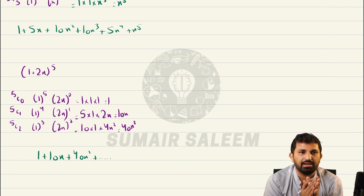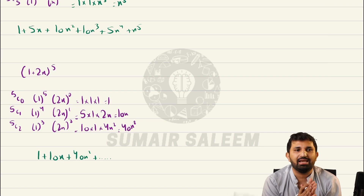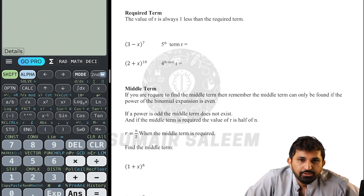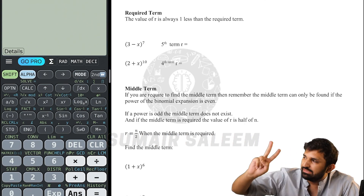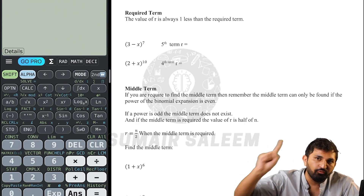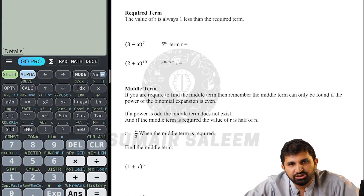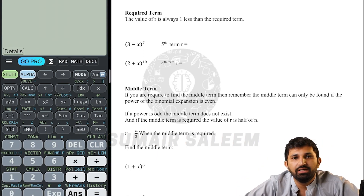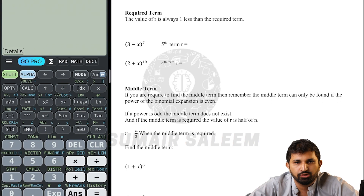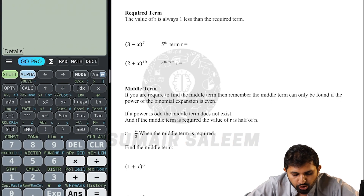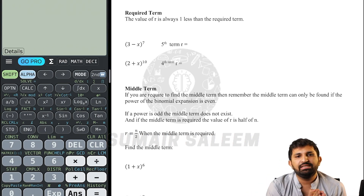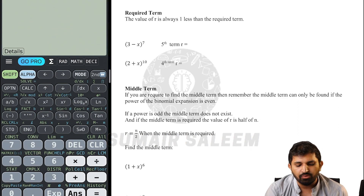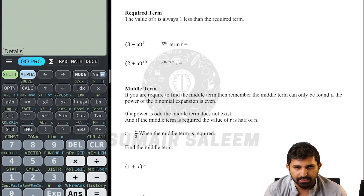These dot dot dots represent that you are not expanding fully. So in this last part we learned two things: first, full expansion, and then first three or first four terms — whatever the examiner requires. Now we are proceeding further with the required term and middle term.